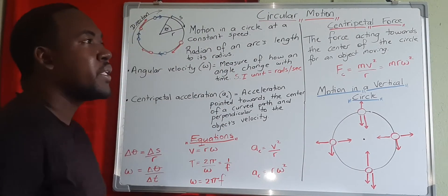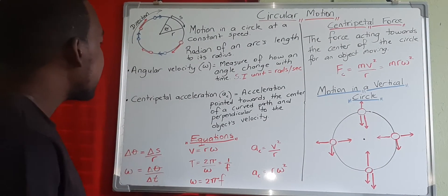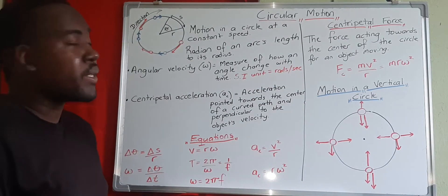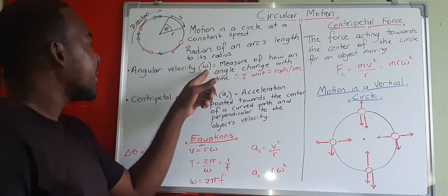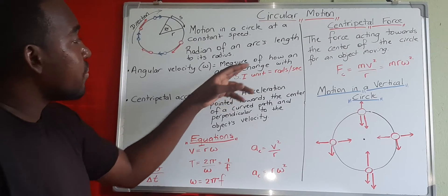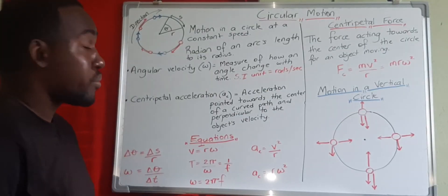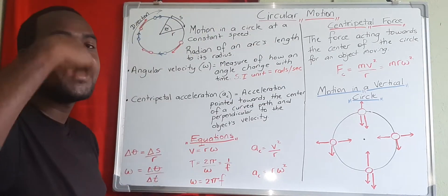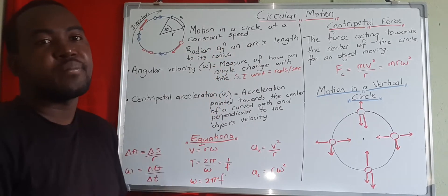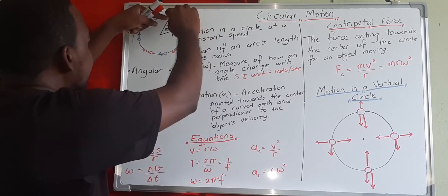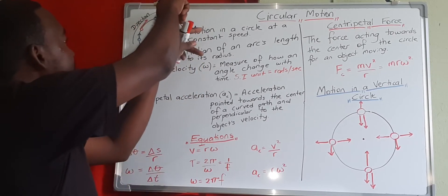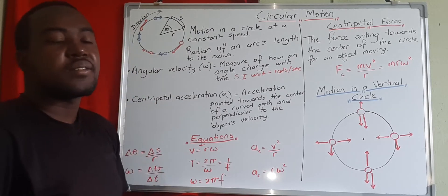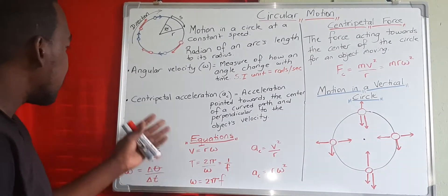When we're moving in circles, a term we normally hear is 'angular,' which tells us this is not an object moving in a straight path but moving in a circular manner. Angular velocity, noted by omega, is the measure of how an angle changes with time. In linear motion, velocity is how displacement changes with time, but in circular motion it's the angle that changes with time — so omega equals delta theta over delta t.